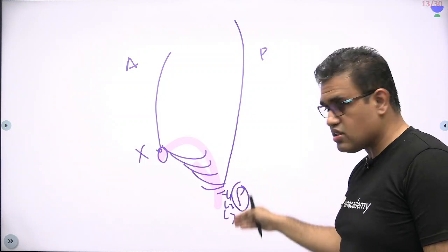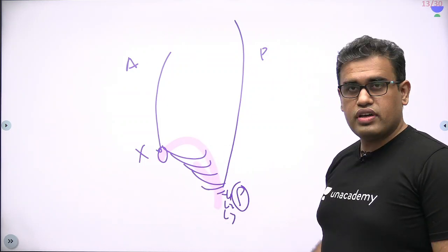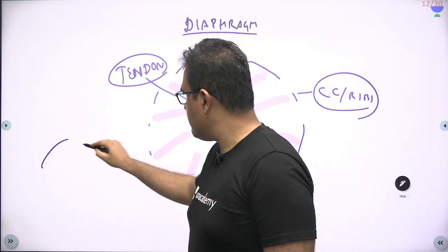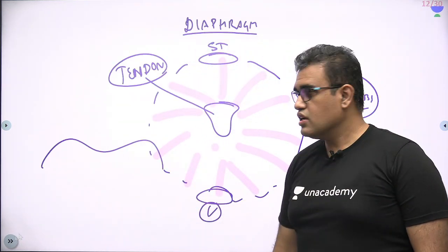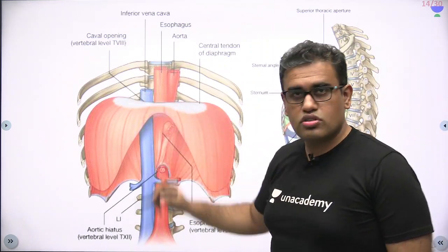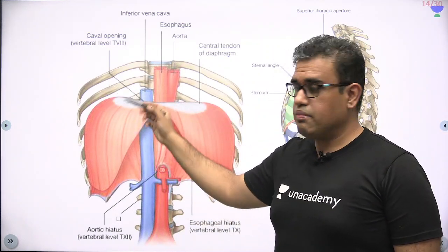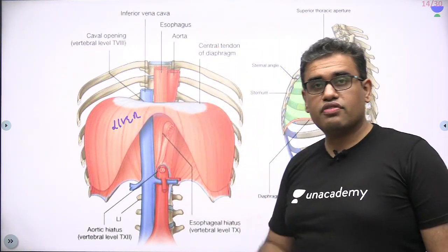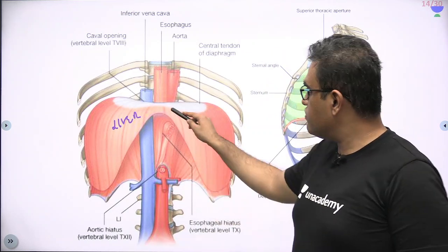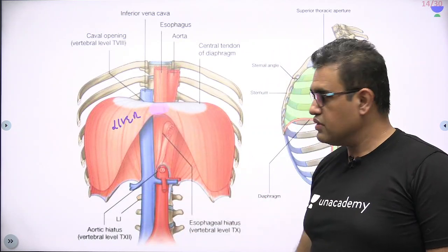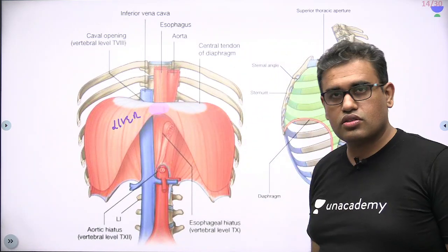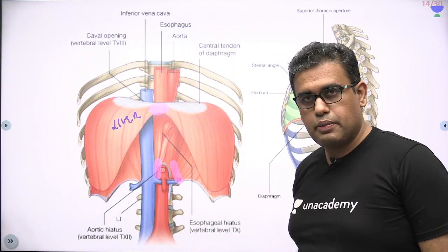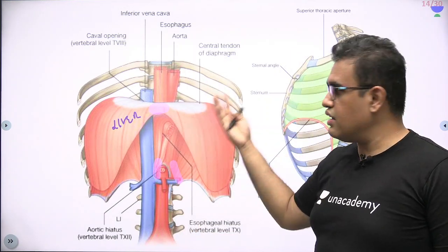Anteriorly it is higher up; mostly it is lower down with a central dome. You have two domes of diaphragm — the right and left. The right dome of the diaphragm will be slightly higher up because of the underlying pressure of the liver. If you remove everything and only the diaphragm is left, this is what you will see.